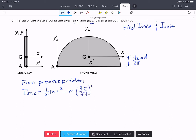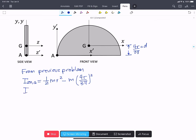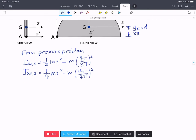And i_xx about G equals 1/4 m r² minus m (4r over 3π)² all squared. We're going to do parallel axis from G to A.